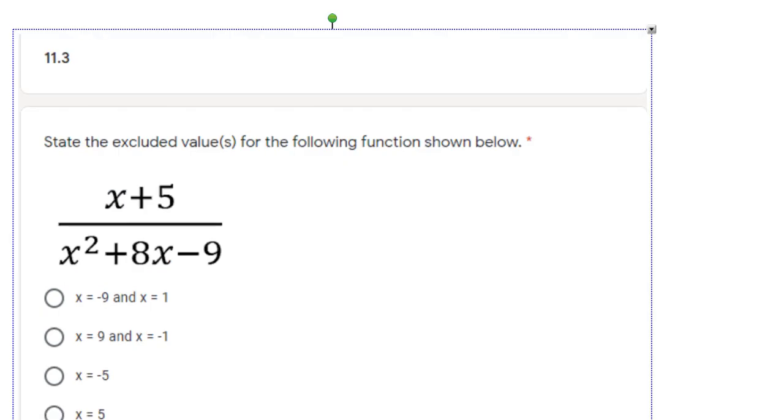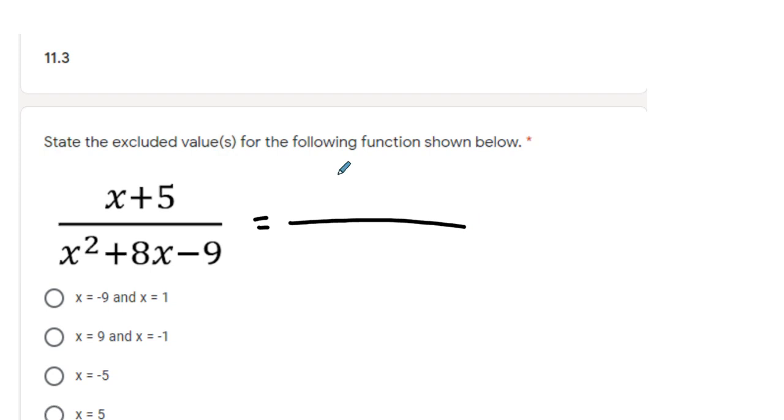11.3 was on finding excluded values and zeros. So state the excluded values. You need to factor first in order to see what all of the items really are. The top is already a factored expression of x plus 5. The bottom, what numbers multiply to be negative 9 and add up to be 8? That's going to be plus 9 and minus 1.